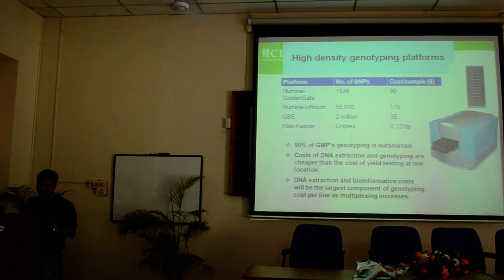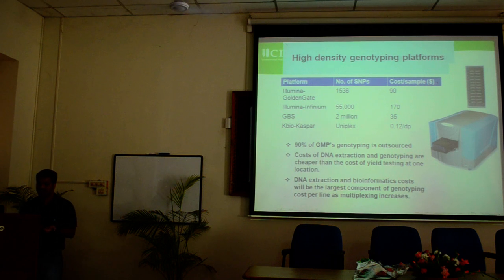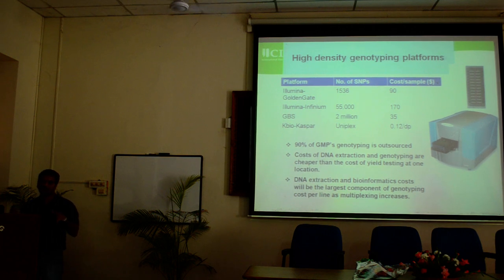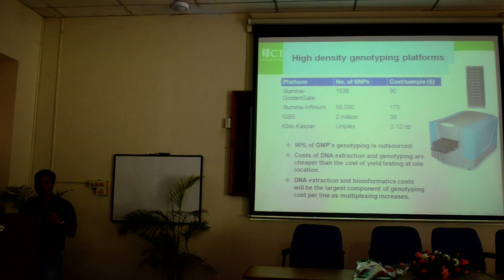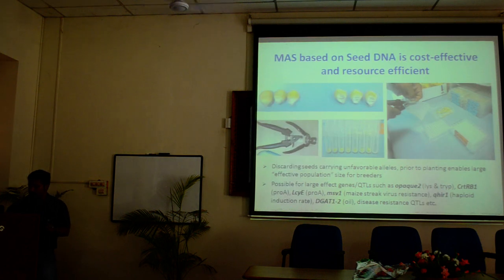Gone are the days when, if you had a mapping population, you had to do everything in the lab — putting SSR markers, doing PCRs, running gels, and documenting. That was a long, time-consuming process. With the advent of SNPs, you just send the DNA to a service lab, get back the data, and spend more time analyzing the data rather than generating it. Generating data is more of a physical job, whereas analyzing is more of a mind job. As a scientist, you should spend more time analyzing the data and making use of that information.